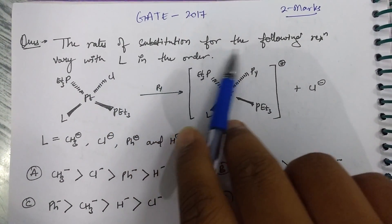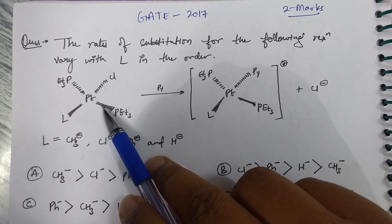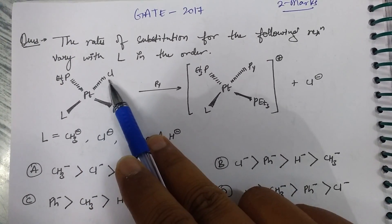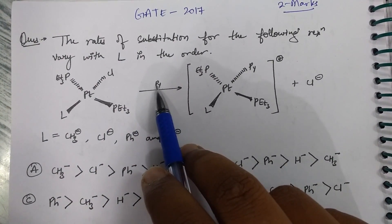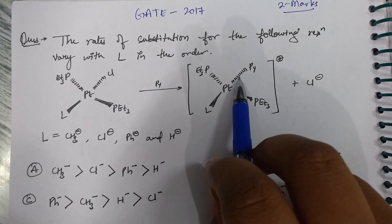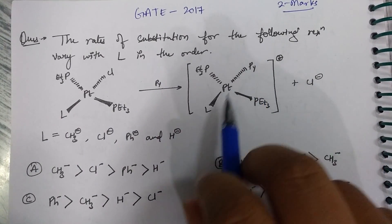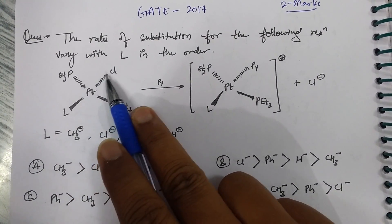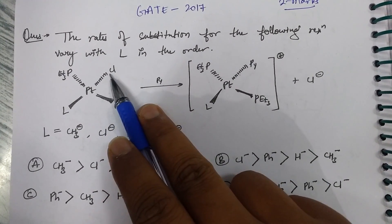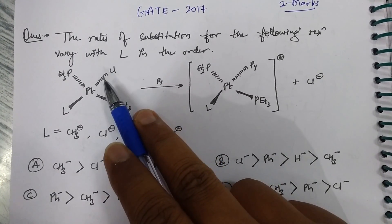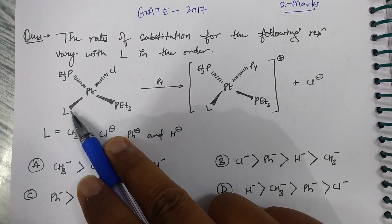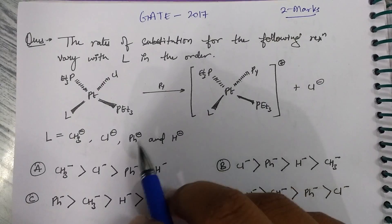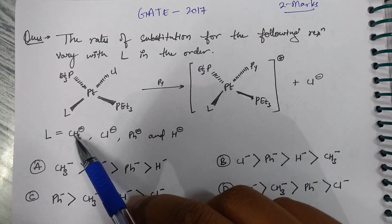The first question states that the rate of substitution for the following reaction varies with L in a certain order. The compound given has platinum with triethylphosphine and chlorine ligands, and a variable ligand L. What is happening is that pyridine is substituting the chlorine in the product. The L ligand is influencing this substitution — this is the classic example of the trans effect.